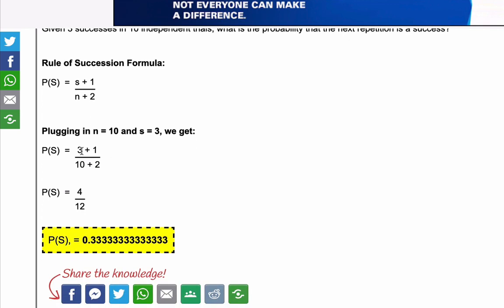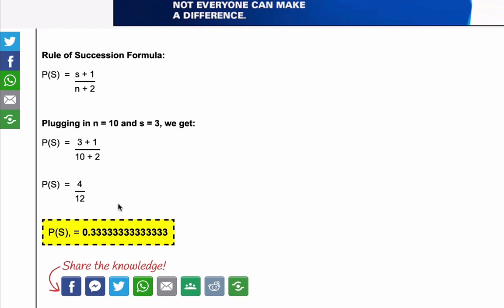So we plug in our three for S, our 10 for N, we evaluate, we simplify, and we get, in this case, the probability is one-third or 0.333 repeating.